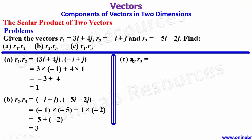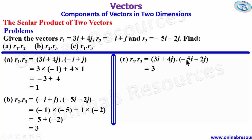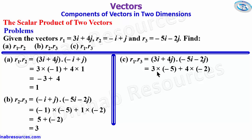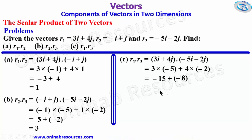For r1 · r3: (3i + 4j) · (-5i - 2j). Multiplying component-wise: (3)(-5) + (4)(-2) = -15 + (-8) = -23. That's all for the solution of problems on the scalar product of two vectors.